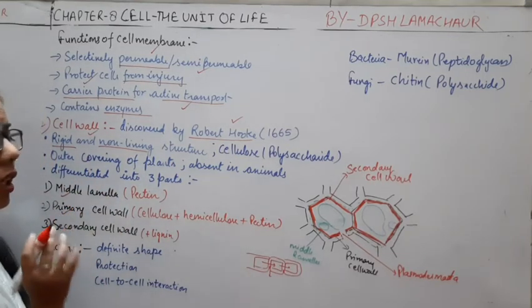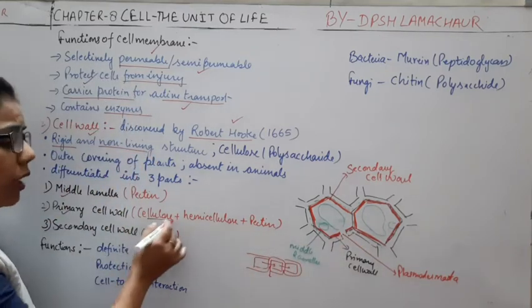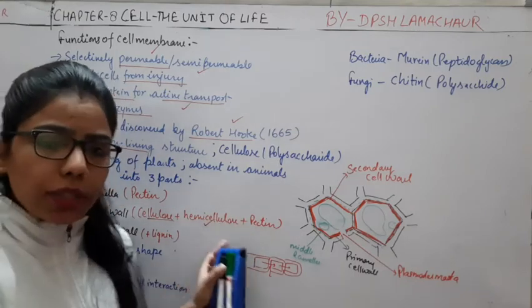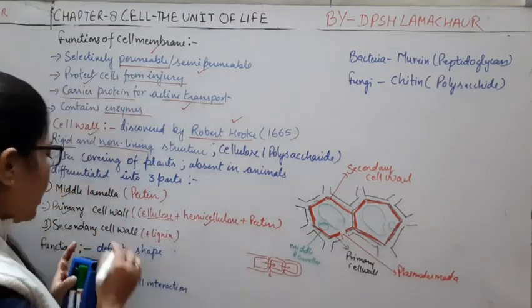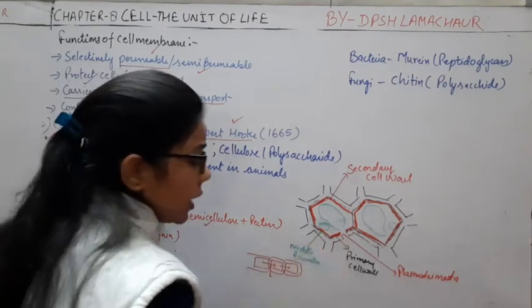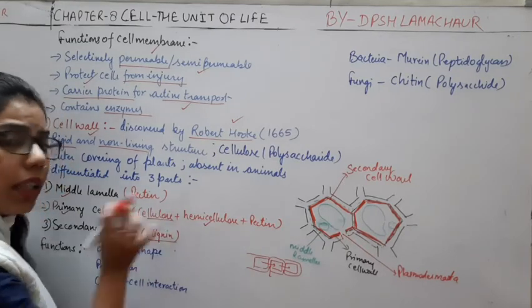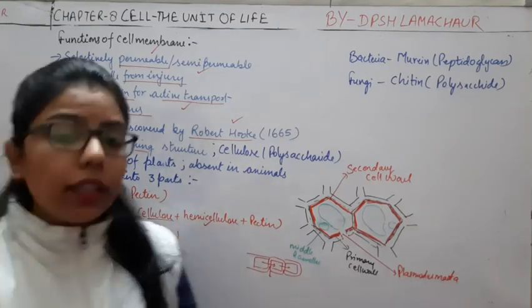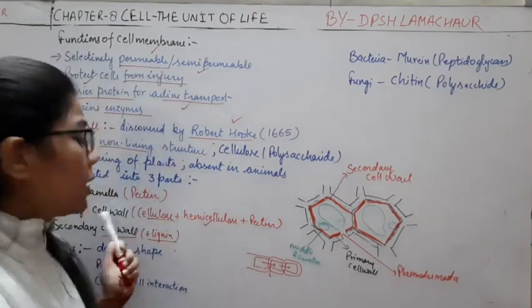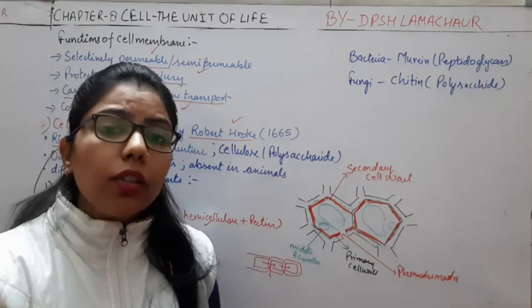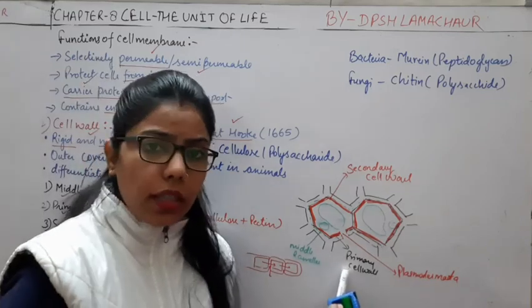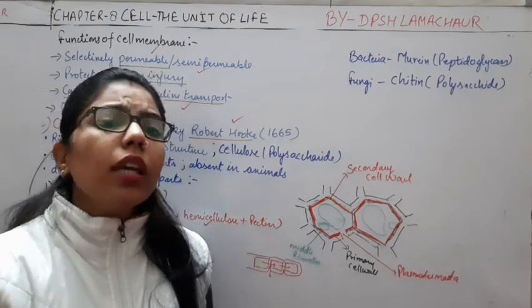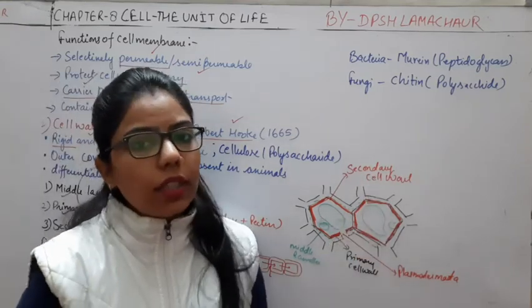The primary cell wall — the outer one — is made up of cellulose, as well as some hemicellulose and pectin. The secondary cell wall is inner to the primary cell wall and is made up of lignin — along with cellulose, hemicellulose, and pectin. The primary cell wall is present in growing tissues where growth is taking place. The secondary cell wall is present mostly in woody plants — after maturation it forms the secondary cell wall.